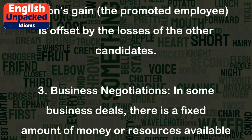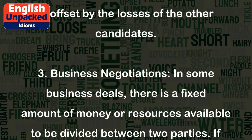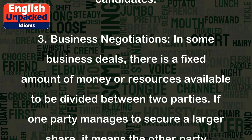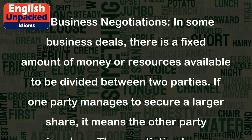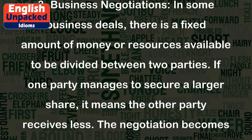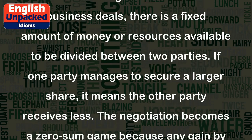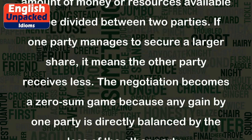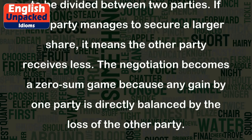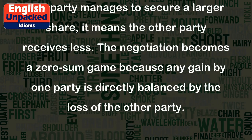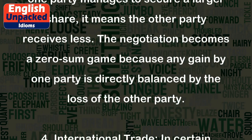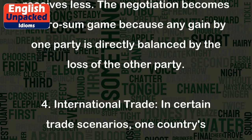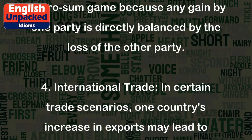3. Business Negotiations: In some business deals, there is a fixed amount of money or resources available to be divided between two parties. If one party manages to secure a larger share, it means the other party receives less. The negotiation becomes a zero-sum game because any gain by one party is directly balanced by the loss of the other party.